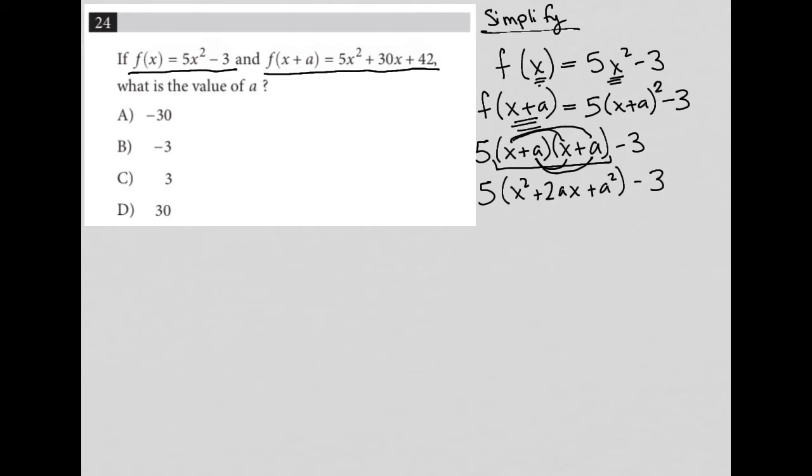To complete the simplification, I'm going to distribute the 5 to each of the terms inside parentheses. I'm left with 5x² + 10ax + 5a² - 3. That's what I would expect from f(x+a).